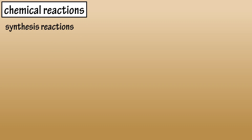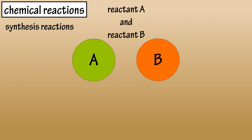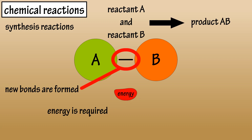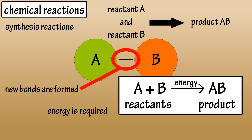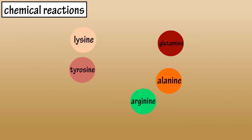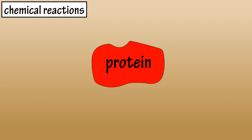In synthesis reactions, two or more substances, referred to as reactants, combine to form a more complex substance called a product. New bonds are formed and energy is required for the reaction to occur. These reactions occur regularly in the body. The formula is: reactant A plus reactant B produce product AB with the required energy. An example is when amino acid reactants combine to form more complex protein products.